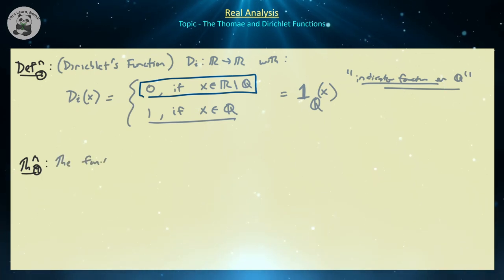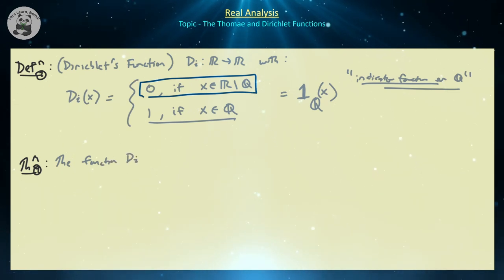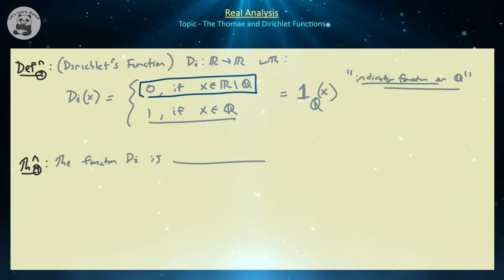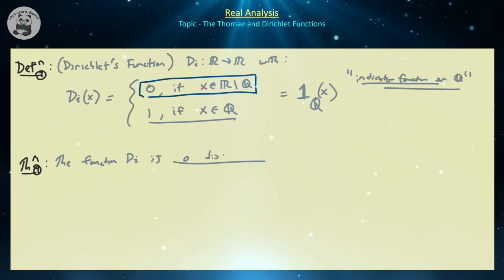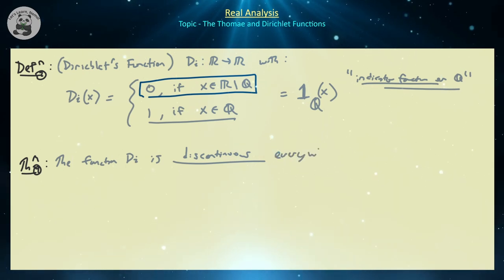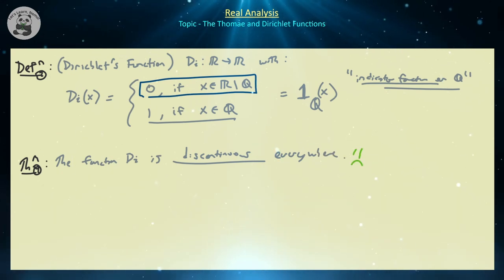What's so special about the Dirichlet function? Notice it's defined the same way as Thomae on the irrationals — equal to zero — but equals a constant value of 1 on the rationals. So what can be said about continuity? The answer is: the Dirichlet function is discontinuous everywhere. It's not even continuous on the irrationals like Thomae was — it's discontinuous everywhere.